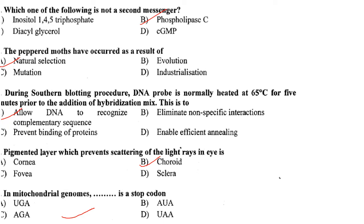Which one of the following is not a second messenger? Phospholipase C is not a second messenger, whereas the other three options are second messengers. The peppered moth coloration change occurred as a result of natural selection. Answer is option A.